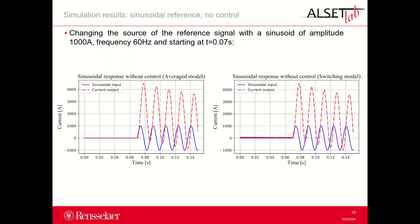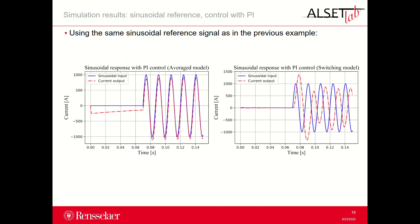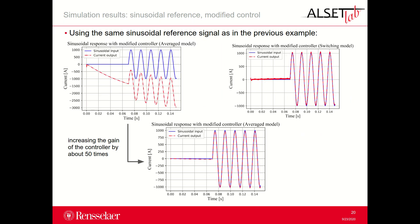Now we can analyze the simulation results changing the source of the reference signal with a sinusoid having the parameters indicated in the slide. The behavior of the systems without any control is not able to track the reference signal for both the average and the switching model of the converter. Introducing the same PI control as in the simulations with the step reference, we can see that the behavior of the system is better with the average model of the half-bridge converter than with the switching model. They both present errors in amplitude and phase compared to the reference, but the average model looks more aligned with the reference. Introducing a more elaborated control strategy, the behavior of the system with the switching model is better than the one with the average model, since the tuning of the control parameters has been performed on the switching model. In order to get the behavior of the system with the average model similar to the system with the switching model, the gain of the controller has to be increased by about 50 times, as we can see in the bottom plot.